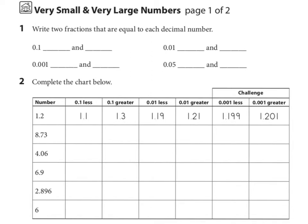Number 1 says write two fractions that are equal to each decimal number. We see the first decimal — how do we read it? One tenth. So we're thinking what two fractions are equal to one tenth? Well, we know that 1 over 10 is equal, because that's the same as one tenth. And another equivalent fraction? We could say ten one-hundredths. There are other fractions you can think of that are equal — these are just two examples.